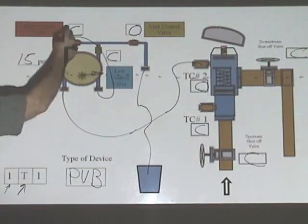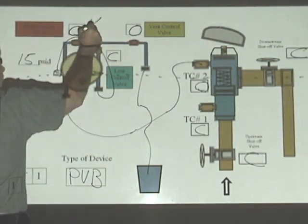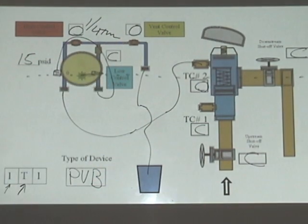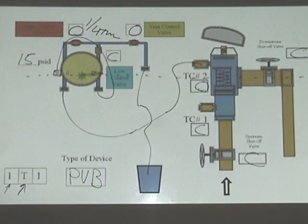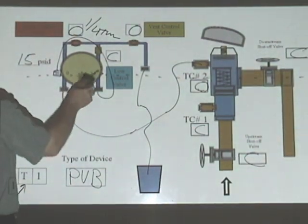So, what we're going to do is open up the high control valve one quarter turn. Water will start to come out of the vent, and your needle will start to drop down.